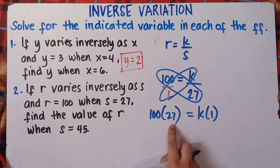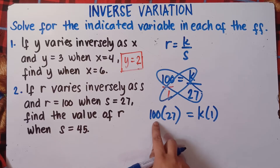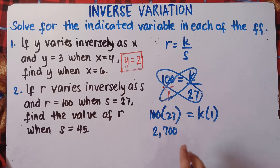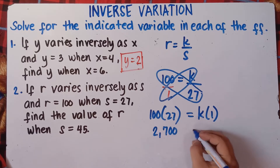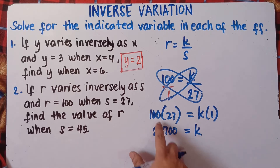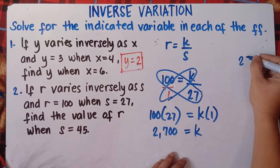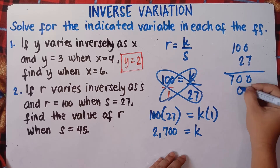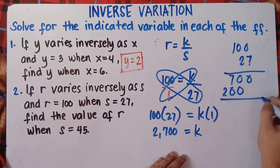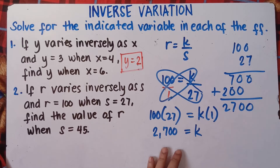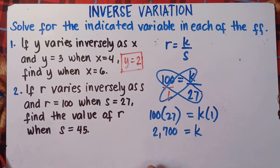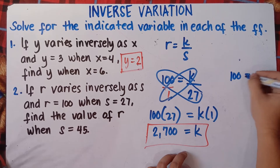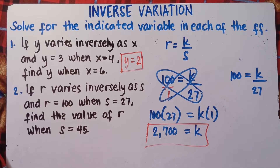100 times 27: since you're multiplying by 100, just add two zeros, giving 2,700. So k equals 2,700. Alternatively, using properties of equality, you can multiply both sides by 27 to eliminate the denominator: 27 divided by 27 is 1, leaving k equals 27 times 100, which is also 2,700. Both methods give the same answer.